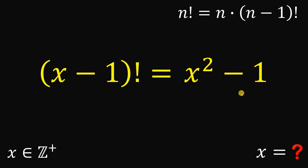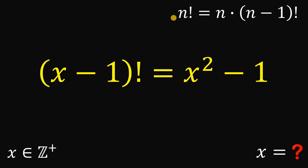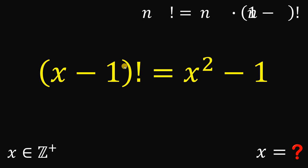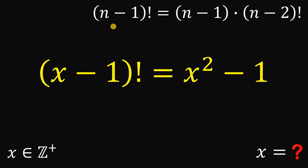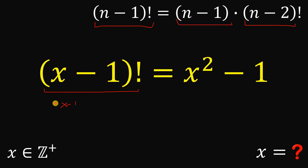Now let's focus on this equation. We have x minus 1 factorial, and we know n factorial equals n multiplied by n minus 1 factorial. So if we have n minus 1 factorial, this is equivalent to n minus 1 multiplied by n minus 2 factorial. Therefore, we can replace x minus 1 factorial with x minus 1 multiplied by x minus 2 factorial.